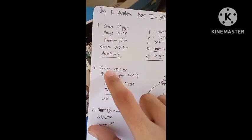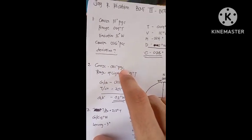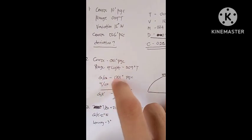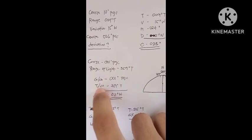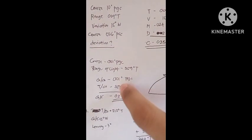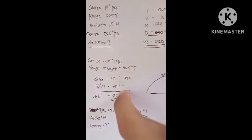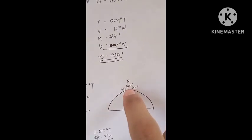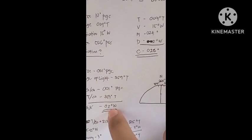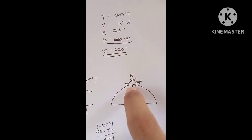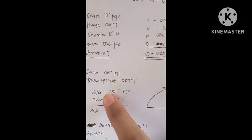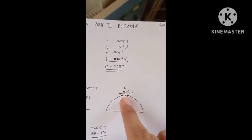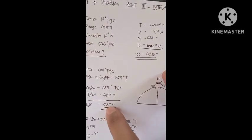In number two, we have a given course of 001 degrees on the gyro compass and the bearing of a light is 359 degrees true. So our gyro compass reads 001 degrees and true is 359 degrees. Our gyro error is 2 degrees west — because if we have 359 true and gyro compass reads 001, the difference is 2. West is the best and east is the least, so the gyro error is 2 degrees west.